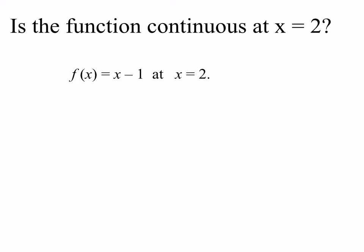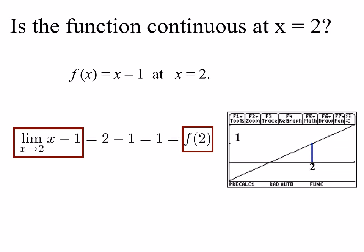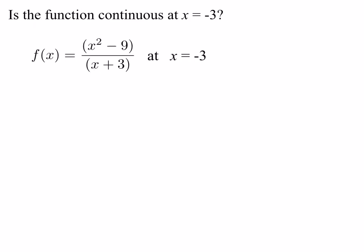Is this function continuous at x equals 2, where the function is f of x equals x minus 1? We know we have to check our definition. We take the limit as x goes to 2 of x minus 1, plug in 2, and get 2 minus 1 equals 1. We see that the limit as x goes to 2 does equal f of 2, because f of 2 is 1. Looking at the graph, f of 2 is 1 and the function is continuous at that point.